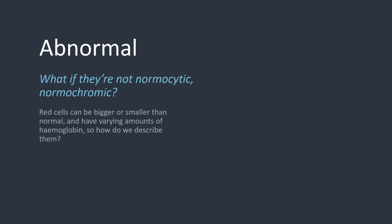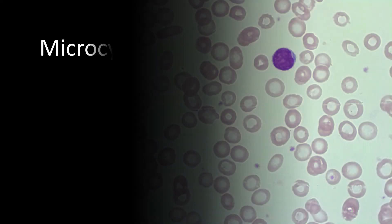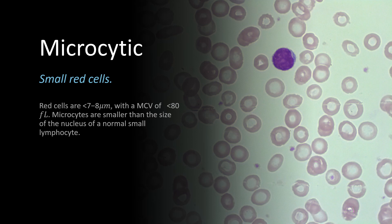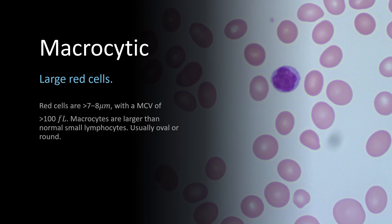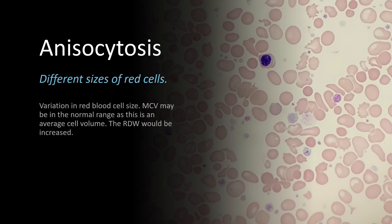What if the red cells aren't normocytic and normochromic? They could be bigger or smaller in size, different shapes, and have different amounts of haemoglobin within them. Smaller than normal red cells are described as being microcytic — the diameter is less than 7–8 micrometers and the MCV is less than 80 femtolitres. In the image on the right, you'll notice many red cells are smaller than the nucleus within the lymphocyte. When red cells are larger than normal, they are described as macrocytic. If a blood film has red cells that are both big and small, that is described as red cell anisocytosis, which on the full blood count can be inferred from a high red cell distribution width, or RDW.